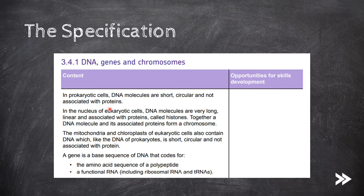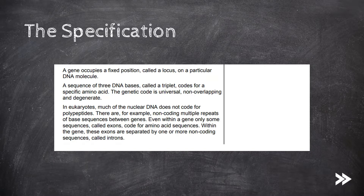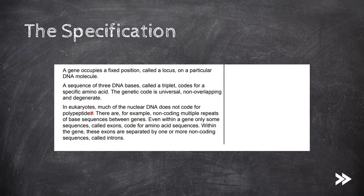We'll first compare the difference between DNA found in prokaryotic and eukaryotic cells. We'll then look at genes specifically in more detail, learning that genes can code for either the amino acid sequences of polypeptides or functional RNA molecules. Then you need to know what loci and triplets are, as well as the fact that the genetic code is universal, non-overlapping and degenerate, and what each of these terms mean. Finally, you need to know that in eukaryotes, much of the nuclear DNA does not code for polypeptides at all — for example, there are things called non-coding multiple repeats, as well as introns within genes.